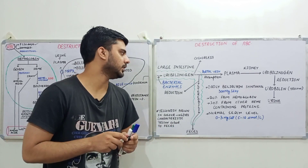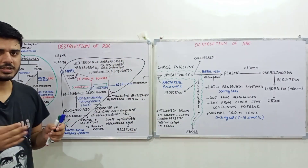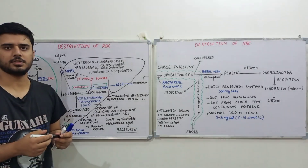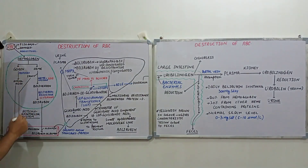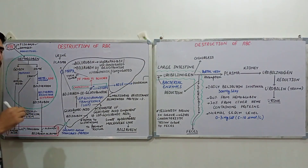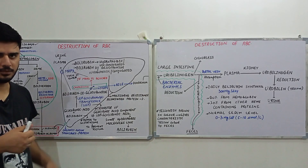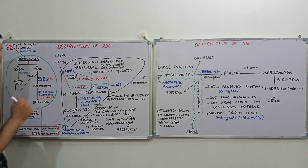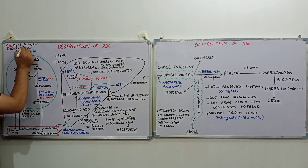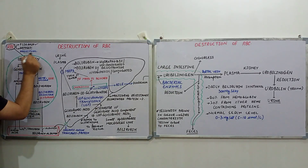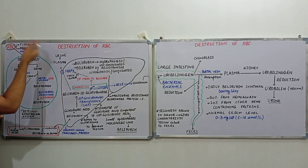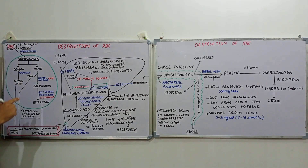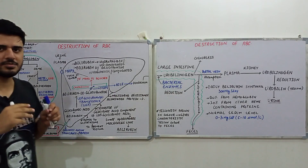When the RBCs become old, the membrane becomes fragile and as they pass through the sinusoidal capillaries within the reticuloendothelial system — for example, the spleen — they get stuck. Within the reticuloendothelial system we have macrophages or monocytes, various phagocytic cells. These phagocytic cells will engulf the old or damaged RBC by the process of phagocytosis.